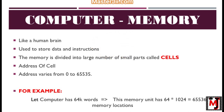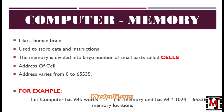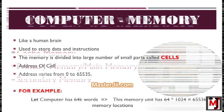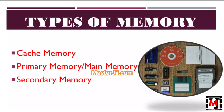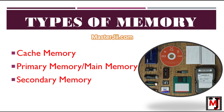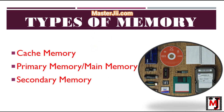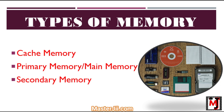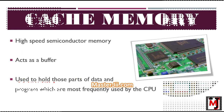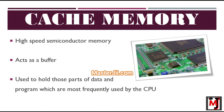Memory is primarily of three types: cache memory, primary memory or main memory, and secondary memory. First we will see what is cache memory.